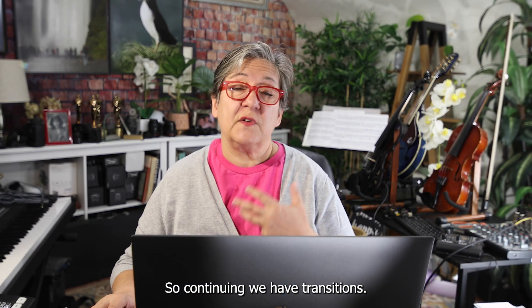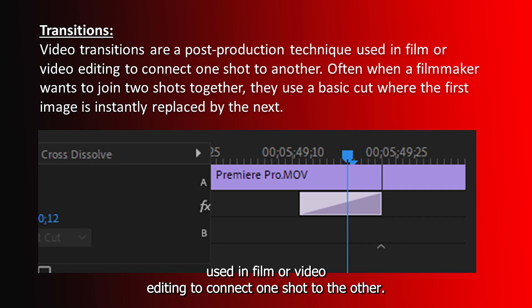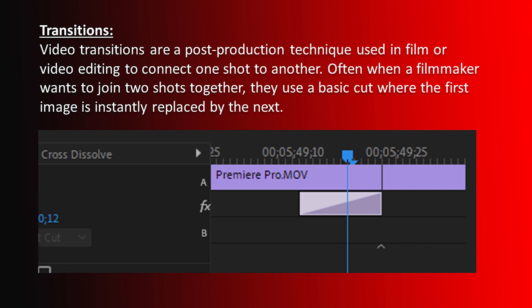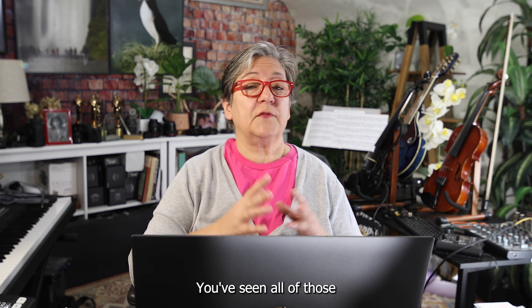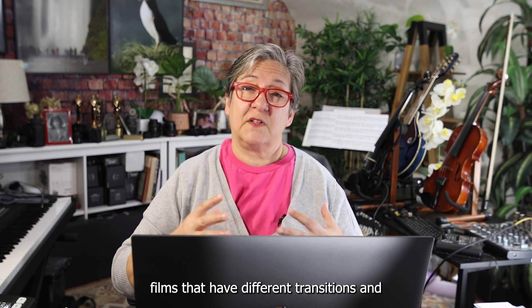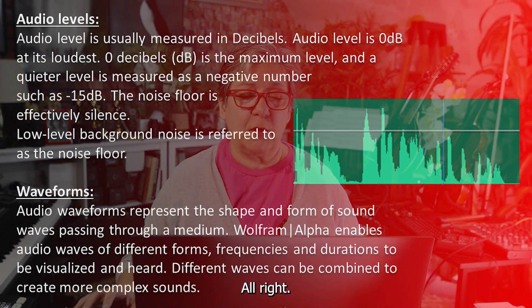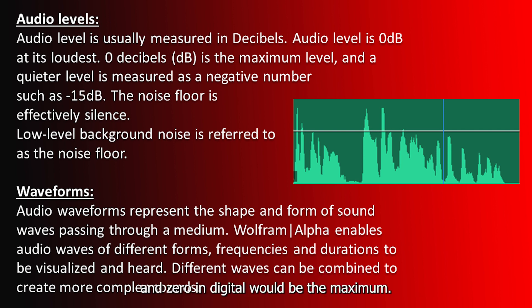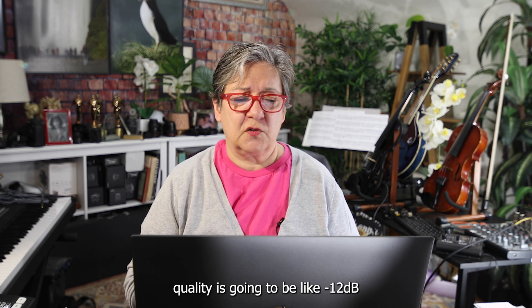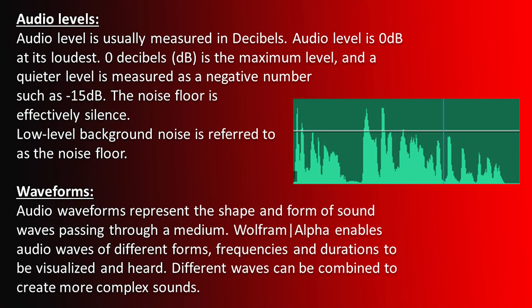Video transitions are a post-production technique used in film or video editing to connect one shot to another. Often just a cut is used, but you've seen Star Wars and other films with different transitions — you can do all of those in After Effects or Premiere Pro. Audio levels are measured in decibels or dB. In digital audio, zero dB is the maximum — nothing can go past zero. Broadcast quality typically targets around minus 12 dB. Some broadcast institutions measure in LUFS. The noise floor represents silence, and the maximum is the peak dB value of your audio.